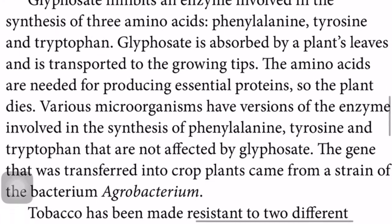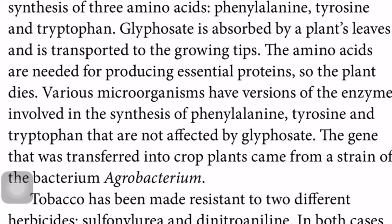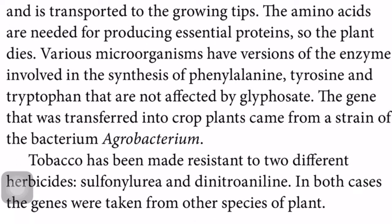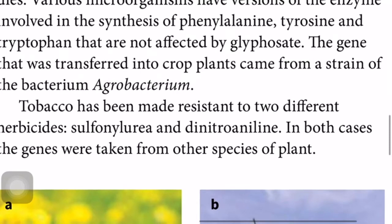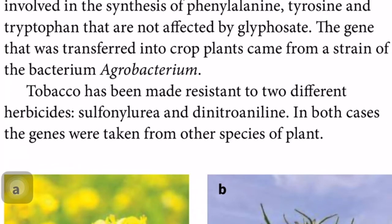Since the enzyme is inhibited by glyphosate, those three amino acids cannot be formed and the plant dies — that's why a glyphosate-resistant crop is needed. Various microorganisms have versions of the enzymes involved in the synthesis of phenylalanine, tyrosine, and tryptophan that are not affected by glyphosate. The gene transferred into crop plants came from a strain of the bacterium Agrobacterium. Some bacteria produce those three amino acids using different enzymes that are not inhibited by glyphosate, so those genes can be extracted and inserted into the crop plant.